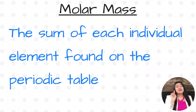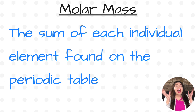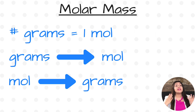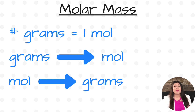There are three different types of conversion factors used in stoichiometry. The first one is molar mass, which is the sum of each individual element found in your compound, all found on your periodic table. That number goes with your grams and is equal to one mole. You know to use molar mass whenever you're going from grams to moles or moles to grams.